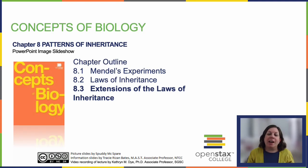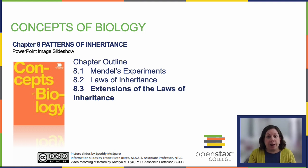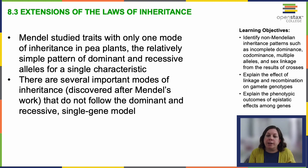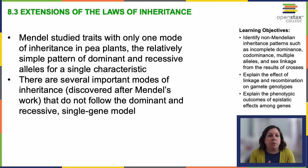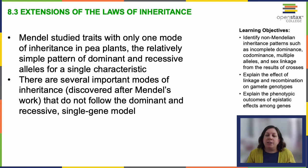Welcome back, I'm Dr. Dye, and now we're going to wrap up chapter 8 by looking at some extensions of the laws of inheritance. Mendel studied traits with only one mode of inheritance in pea plants — the relatively simple pattern of dominant and recessive alleles for a single characteristic. We had our pea plants with their purple flowers or their white flowers; there were only two options. There are several important modes of inheritance discovered after Mendel's work that don't follow the dominant and recessive gene model.